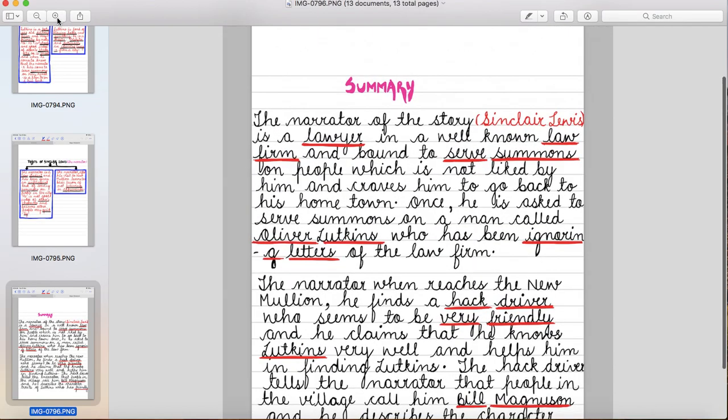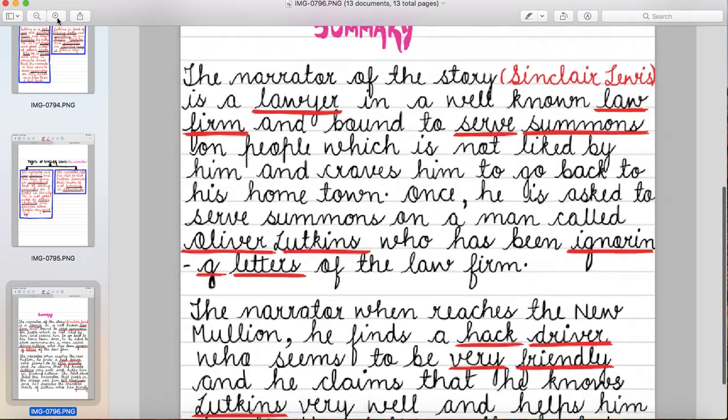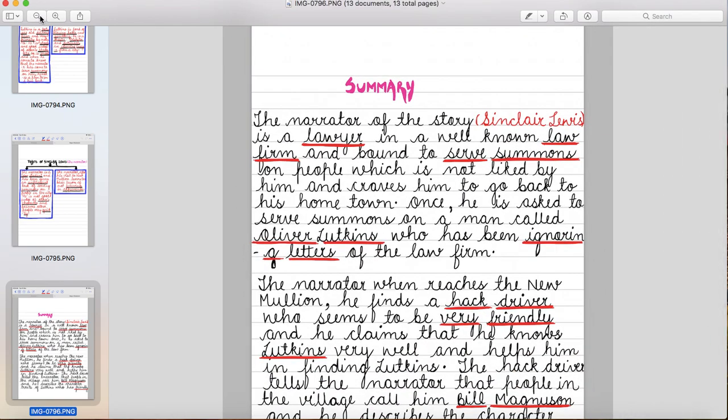Now let's read the summary. The narrator of the story, Sinclair Lewis is a lawyer in a well-known law firm and bound to serve summons on people which is not liked by him and craves him to go back to his hometown. Unko court ke orders logon tak pohunchane padta hai jo kaam unko bilkul bhi achha nahin lagta hai. He doesn't like that work and because of this work, he wants to go back to his hometown.